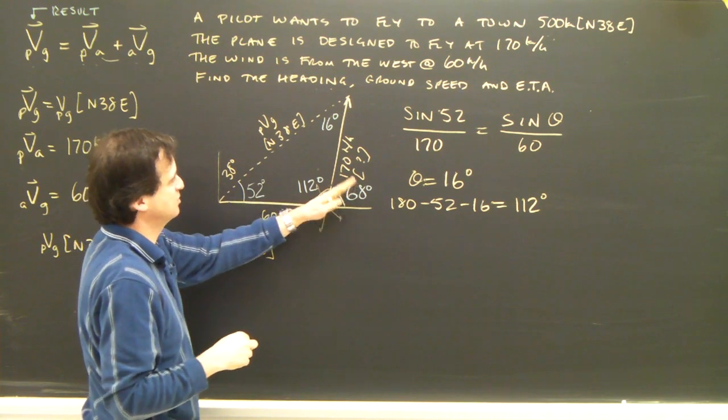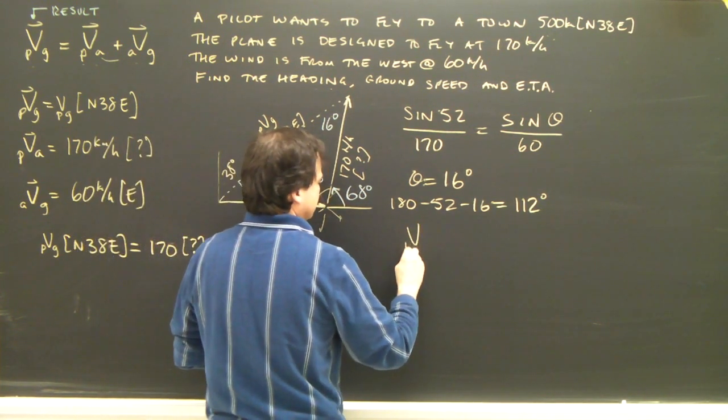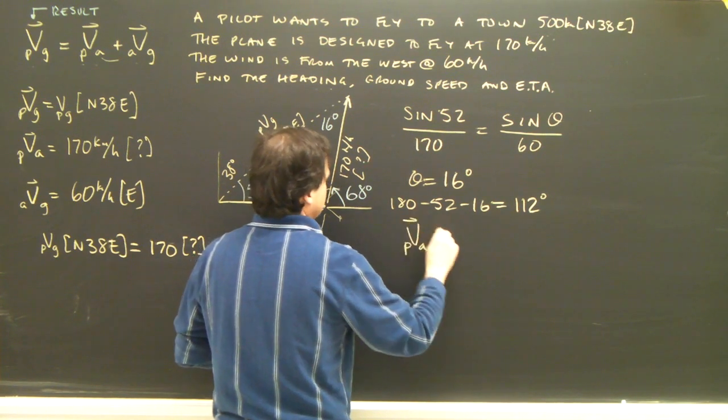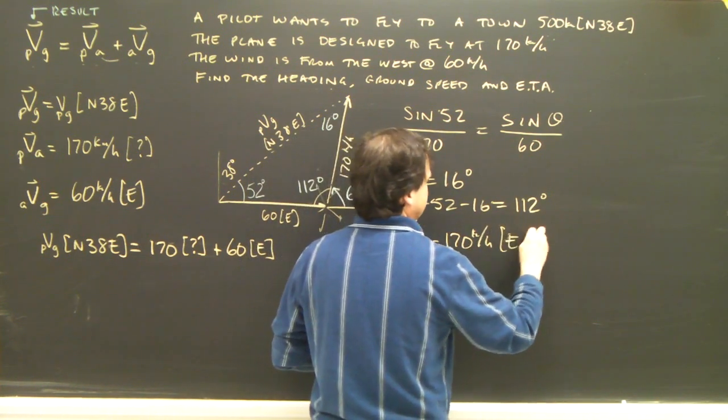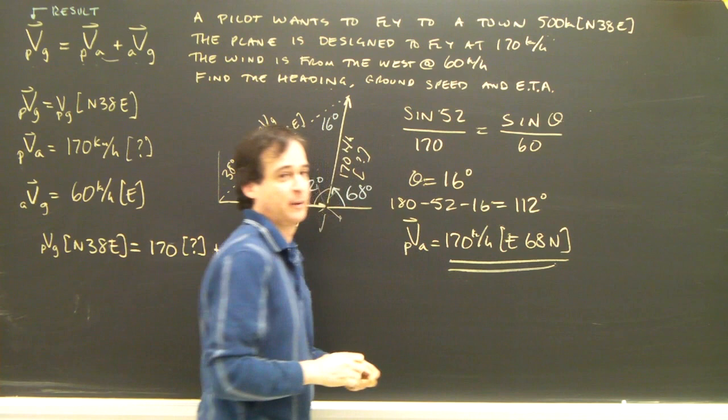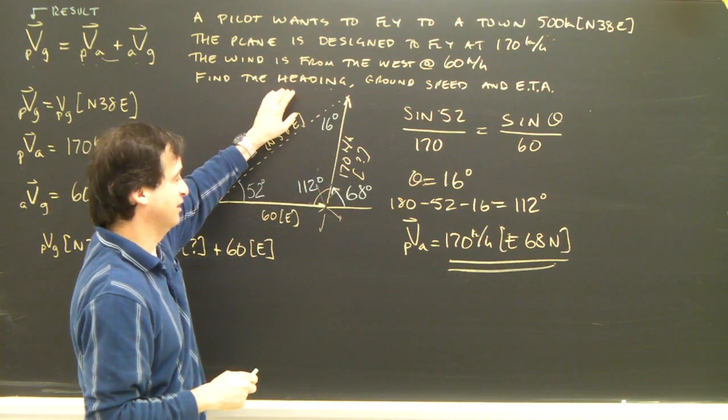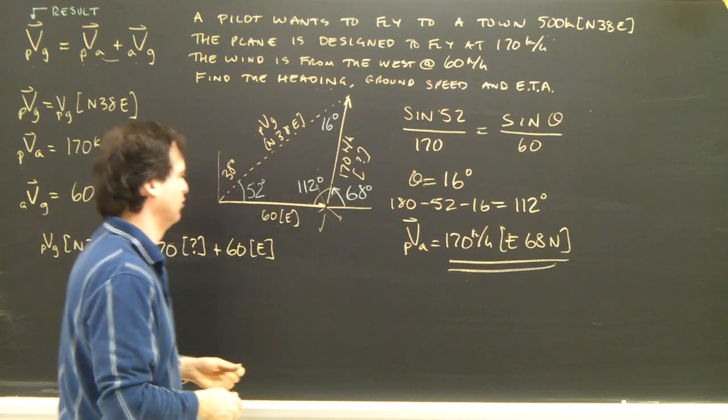180 minus 112 is 68. So this is east, 68 north. I now know the velocity of the plane relative to the air is 170 kilometers per hour, which I already knew, east 68 north. One of the questions was the heading. The heading is what goes with the plane relative to the air. I found that east 68 north is the heading.